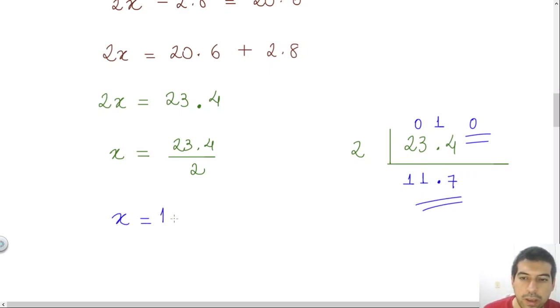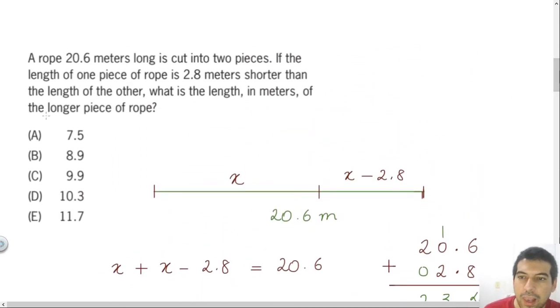So x will be 11.7 meters. And look, the question asks us the longer piece. So once x is 11.7, this one will be less than this piece here. This 11.7 will indeed be the longer piece because this one will be 11.7 minus 2.8. So 11.7 will be the value of x and will be the answer. The answer will be letter E.